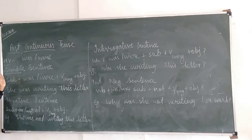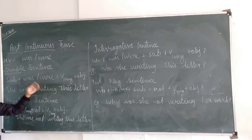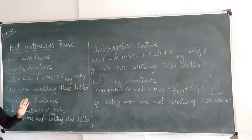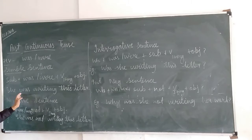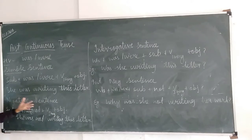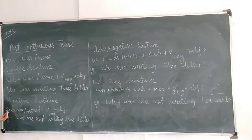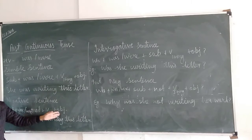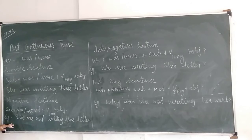Now the simple sentence. Sentence structure is: subject plus was/were plus verb ing form plus object. Example: she was writing this letter. Then the negative sentence. Sentence structure of the negative sentence: first subject, then helping verb — was or were — then not, then verb ing form and object. Example: she was not writing this letter.